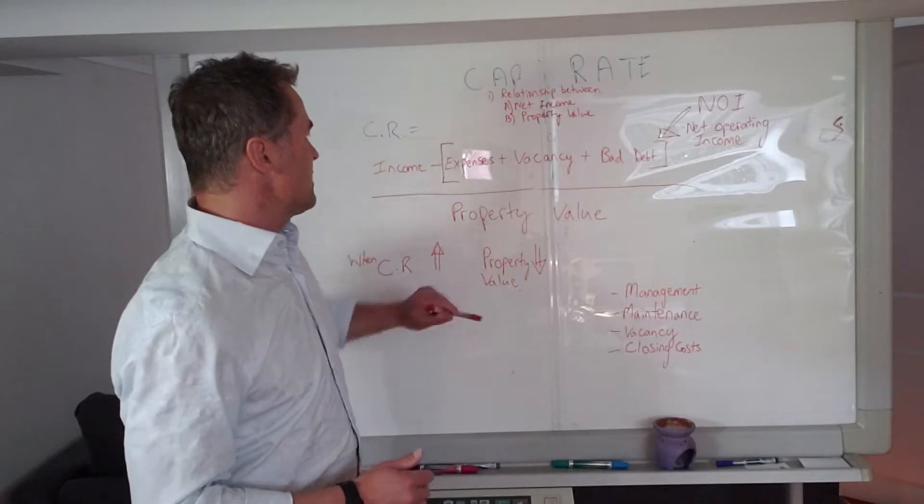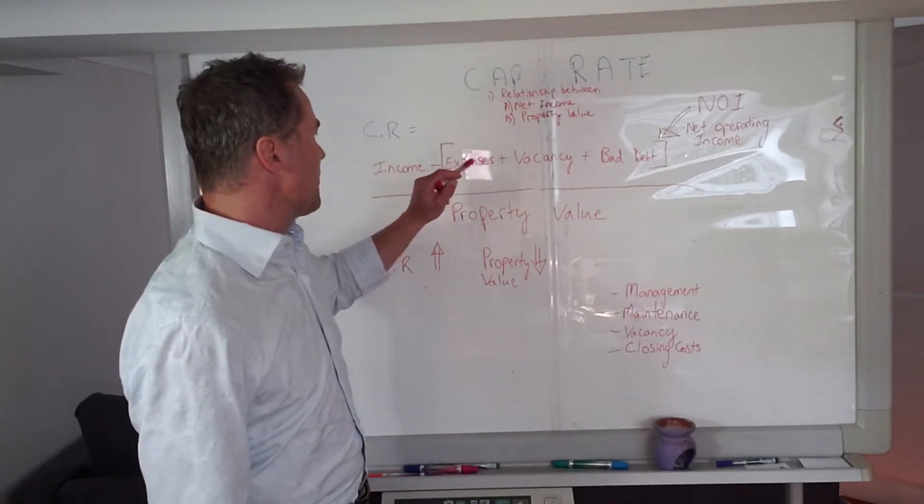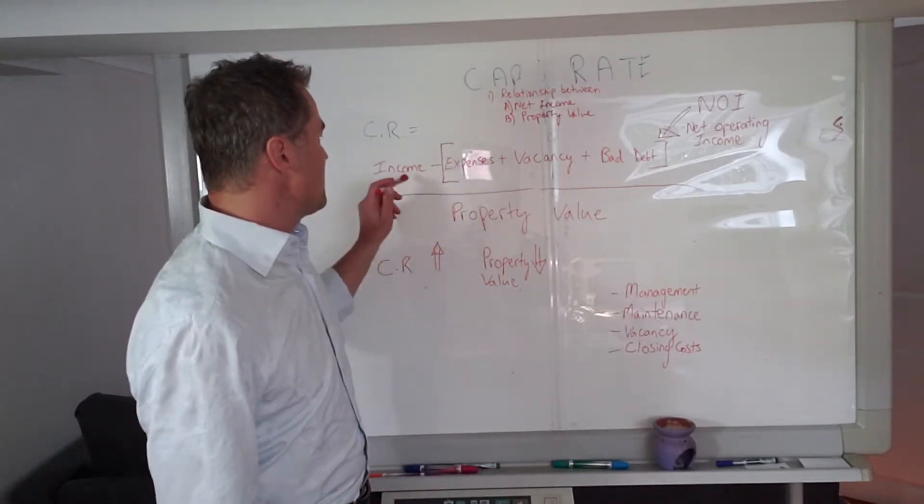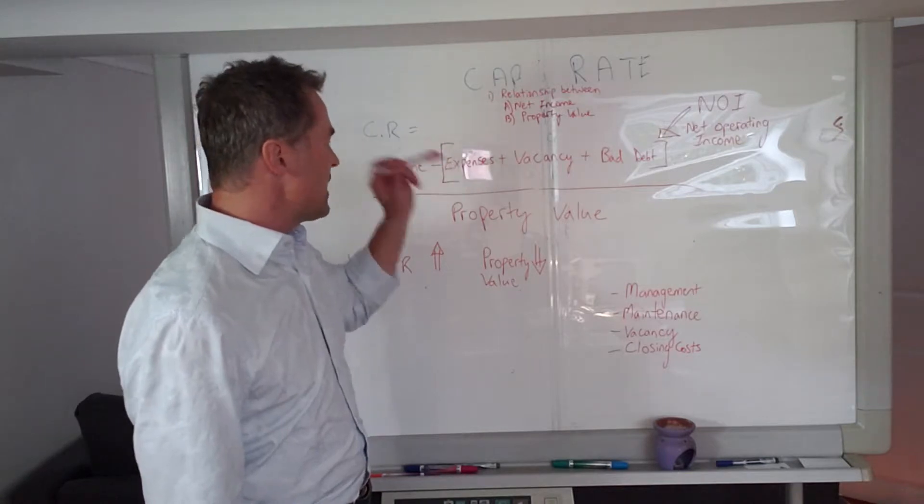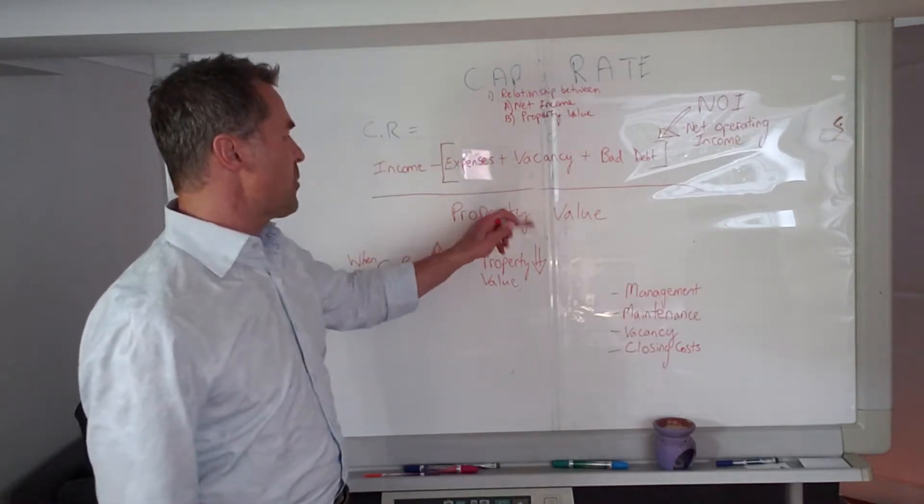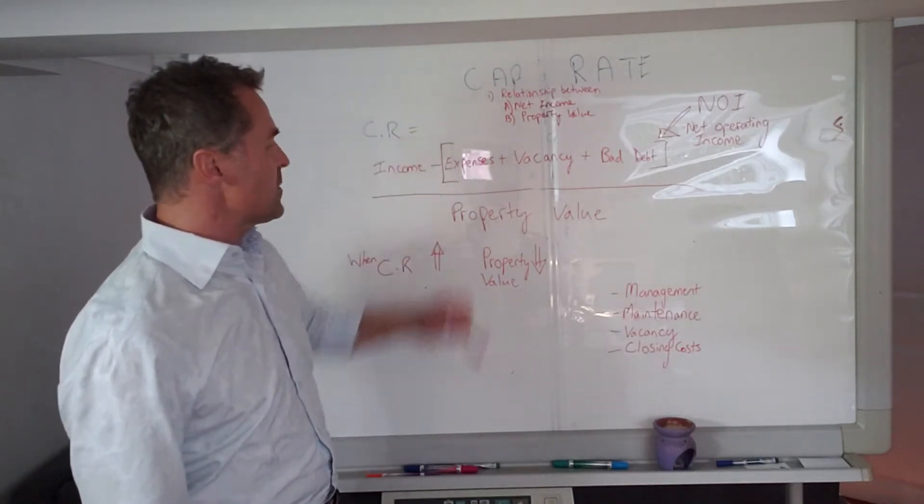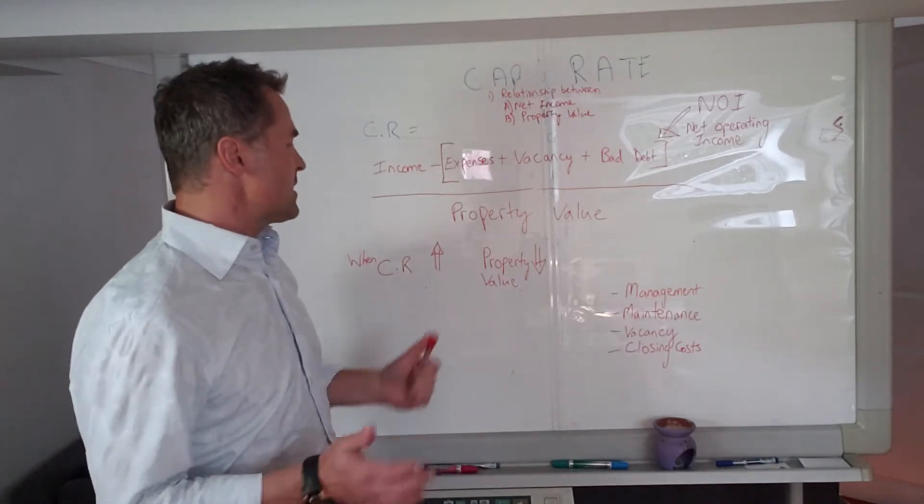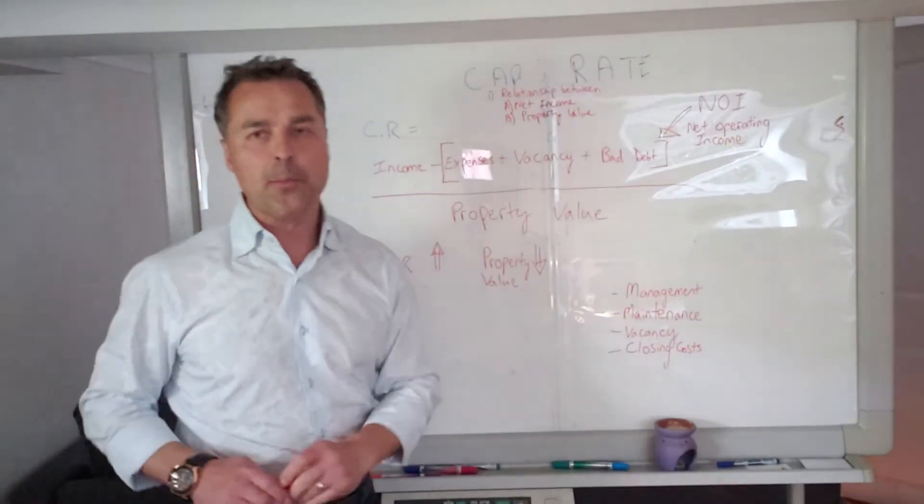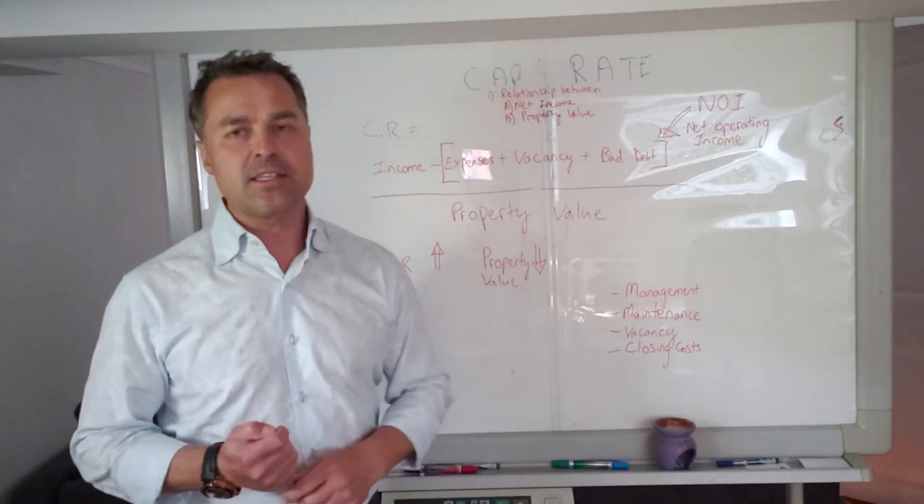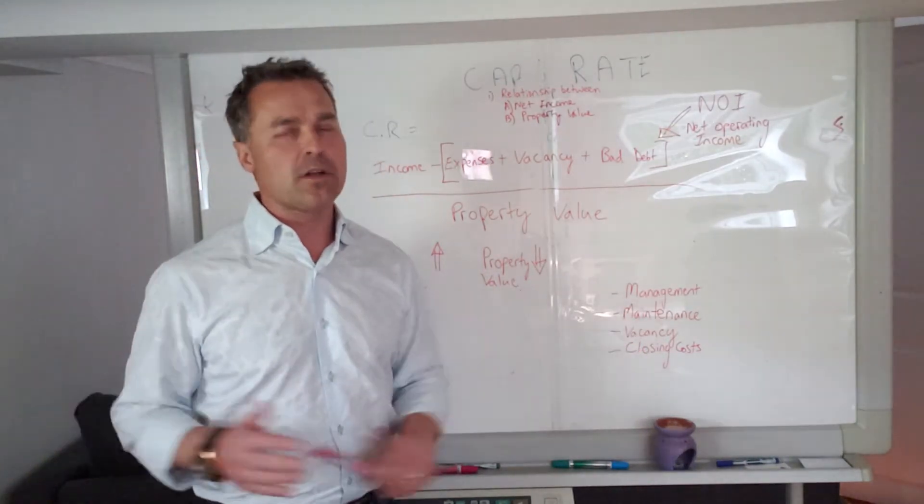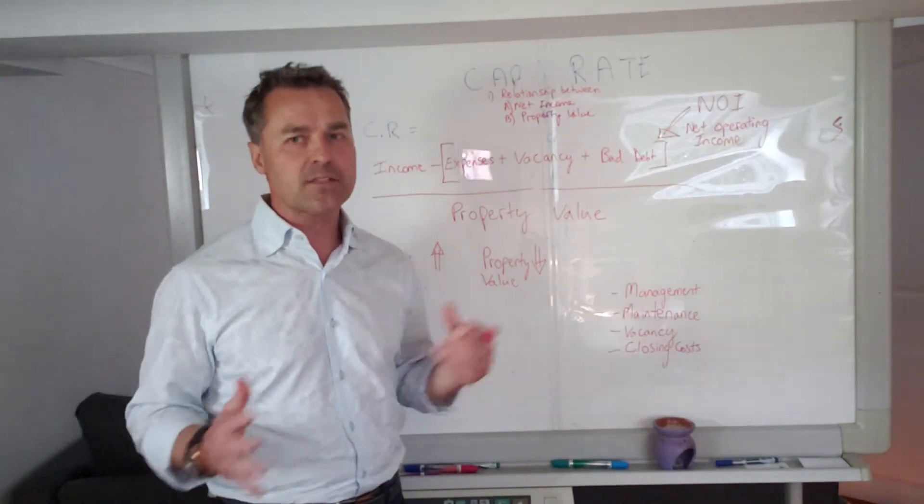You can play with any of these variables—your property value, your income, your NOI—to get your cap rate. You can also figure out your property value. It's inversely proportional. So when your cap rate is high, the property values are low. It's an inverse relationship, and vice versa.